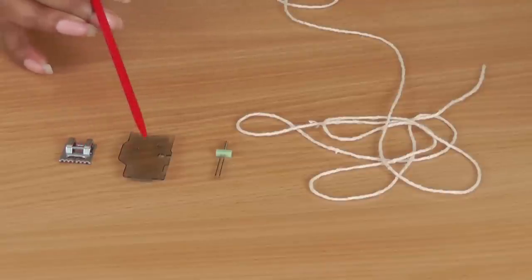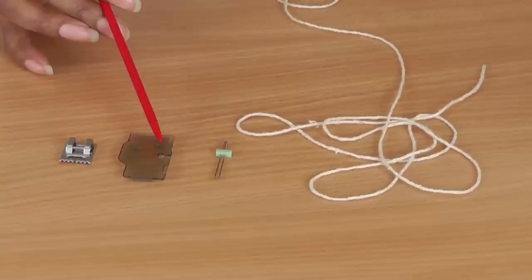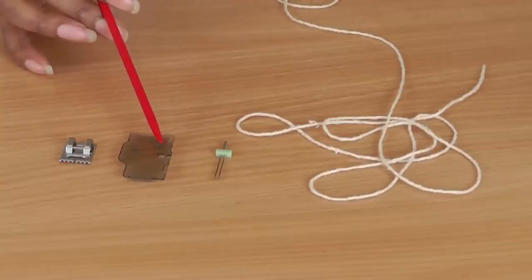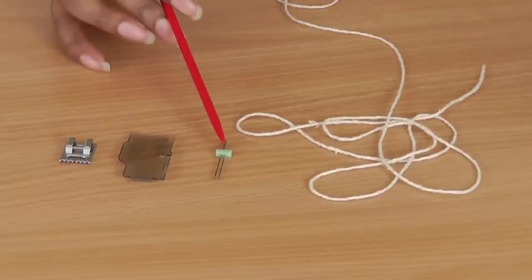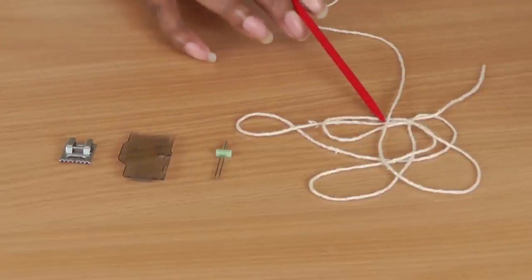Obviously you're going to need your pintuck foot. You've got a special cover here that enables you to thread the cord into, which is the bobbin cover, and you're going to need twin needles and you're going to need cording.